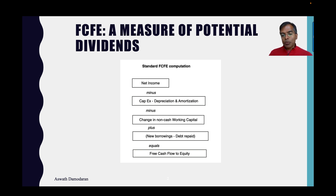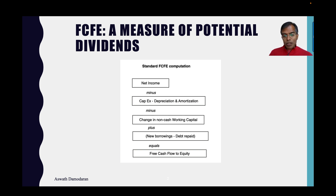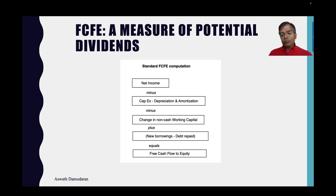You can have a company with positive net income, and if you have enough net capex and change in working capital and you don't use much debt, you could end up with negative free cash flow to equity. Conversely, you can have a company with negative net income — losing money — but if your depreciation exceeds your capex, your working capital decreased, and you borrowed money that year, you can end up with positive free cash flow to equity.